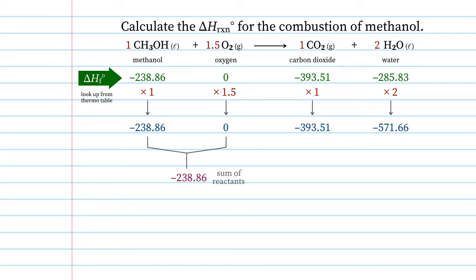Next step, sum up your reactants, which is pretty easy because there's a zero in it, but it's minus 238.86. And then we're going to sum up the products, and we're going to get negative 965.17.